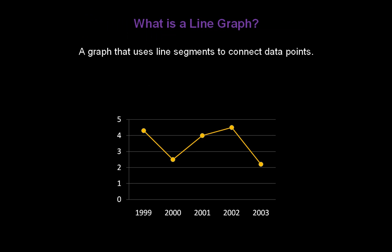First of all, what is a line graph? Well, a line graph is a graph that uses line segments to connect data points. Line graphs can be used to show how data changes over a period of time.